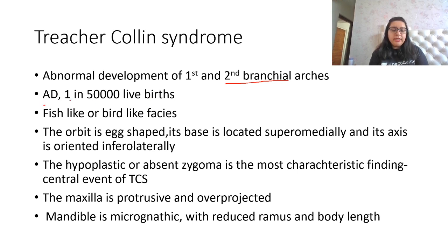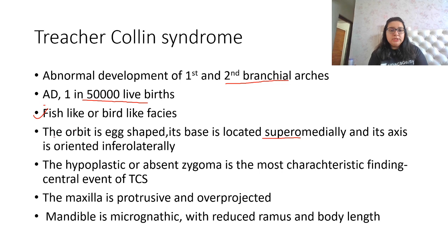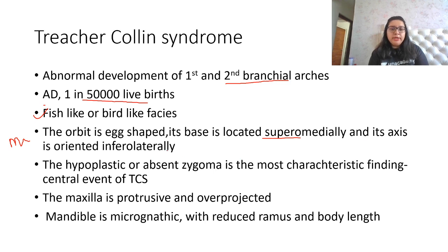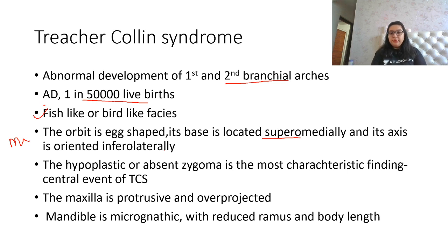Patients with Treacher Collins syndrome have typical bird-like or fish-like faces. The orbit is X-shaped and its base is located superiorly — remember this as an MCQ point. Its axis is oriented inferolaterally. The hypoplastic or absent zygoma is the most characteristic finding and the central event of Treacher Collins syndrome. The maxilla is protrusive and overprojected, and the mandible is micrognathic with reduced ramus and body length.